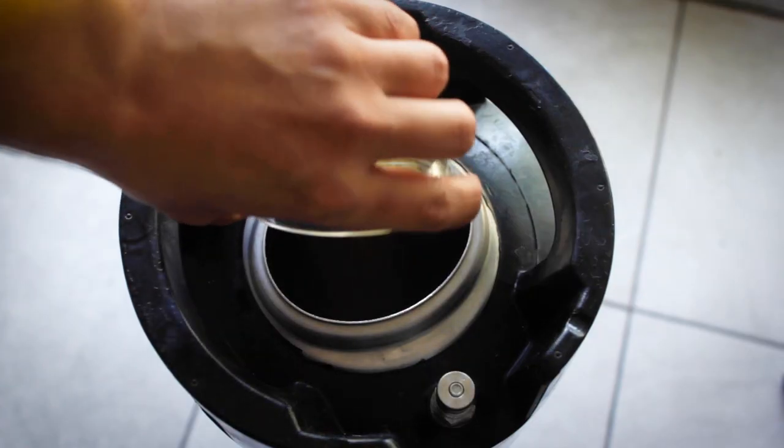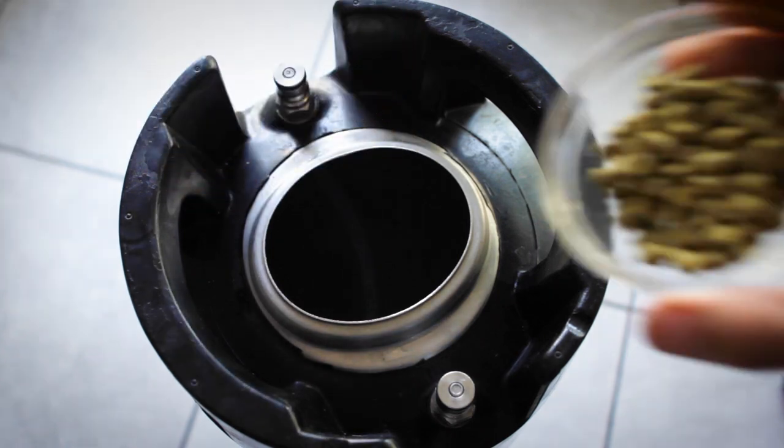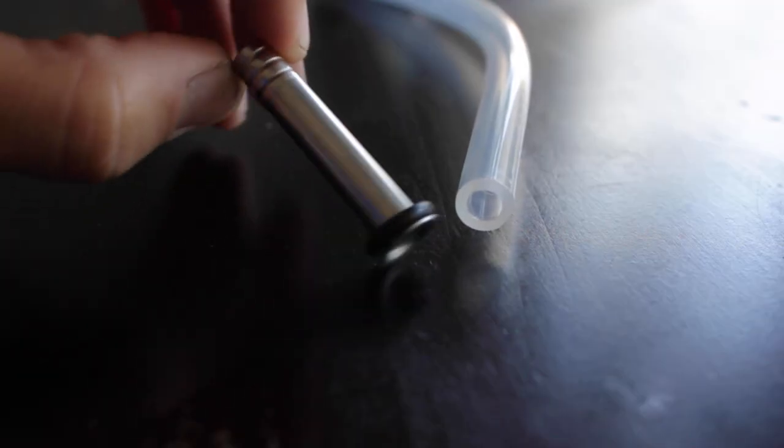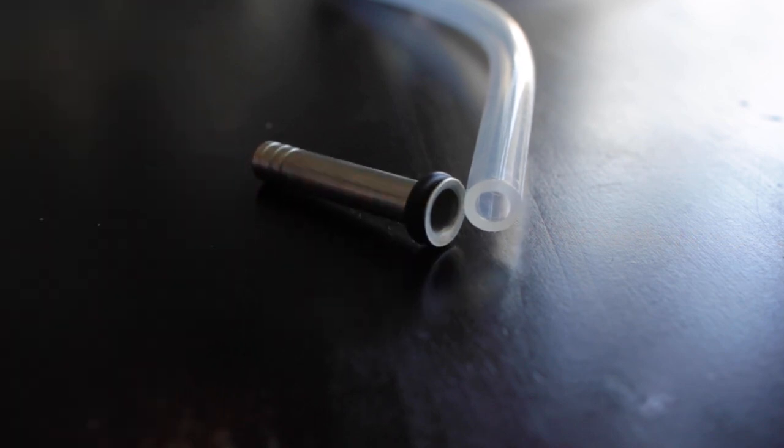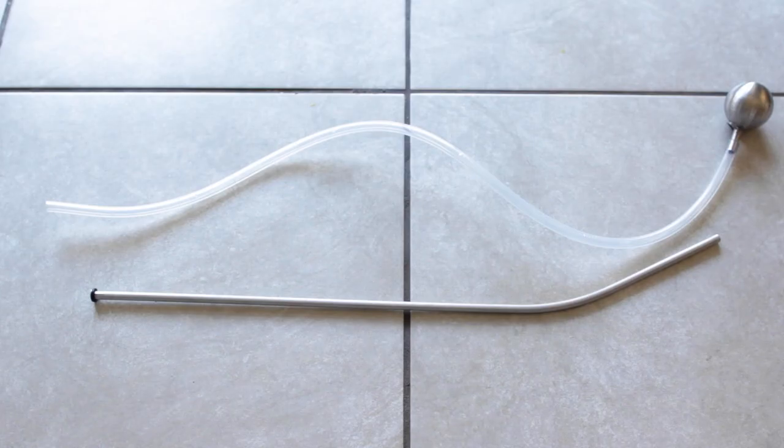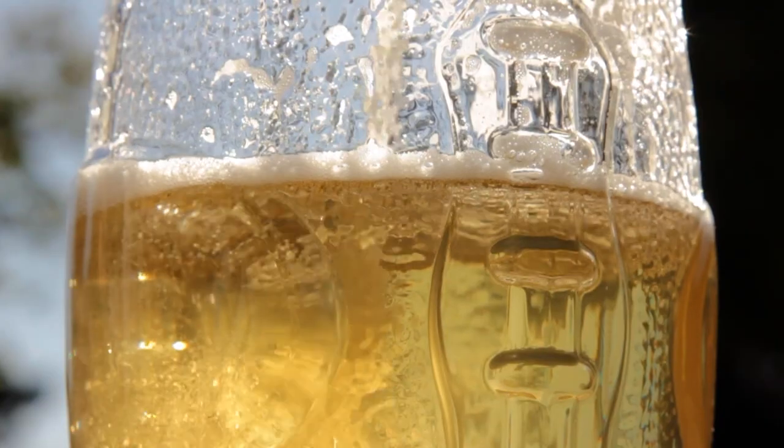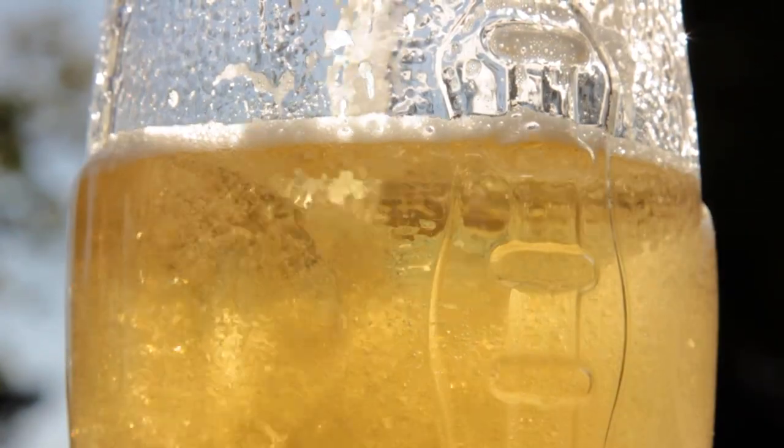Now, if you make a ton of hoppy beers, you can run into some clogging issues with floater hops on top, so they sell filters to help with that. I was initially intimidated by installing it, but it really was quite simple. Just keep your regular dip tube around in case you want to switch back at any point. A floating dip tube doesn't make for better beer, but it just means I can get to drinking the best looking beer faster.